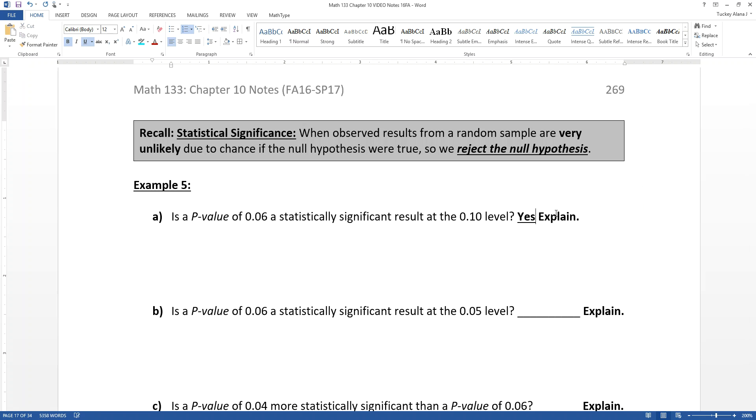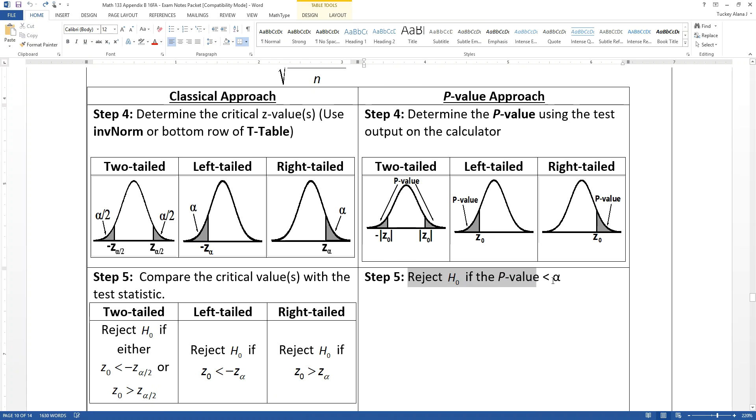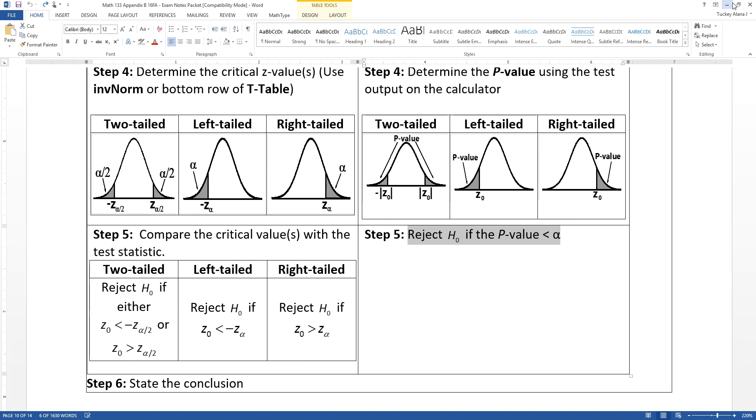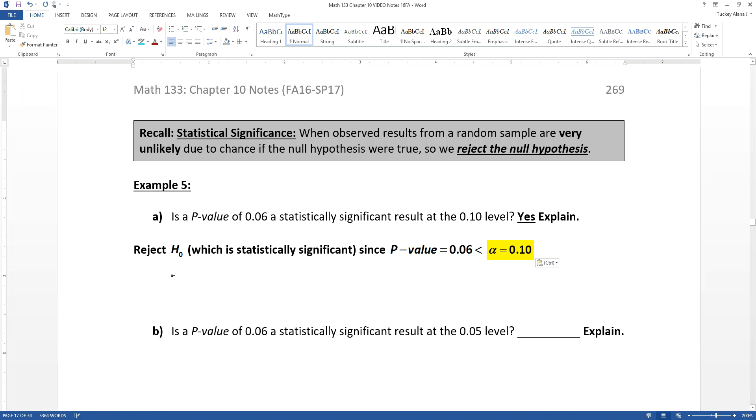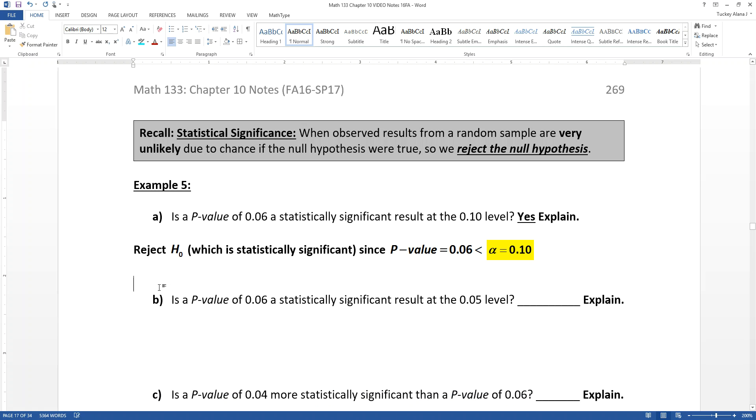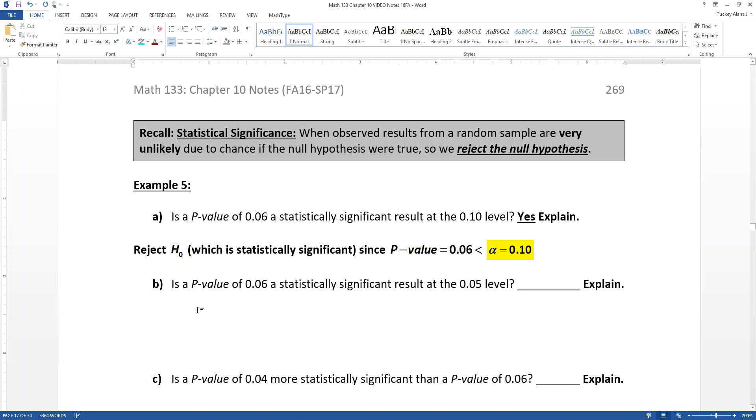So remember that we get to reject the null hypothesis if your p-value is less than alpha, period, the end. That's what makes p-value so awesome. You're always looking for a low p-value. So we would reject the null hypothesis because our p-value is less than alpha and that means statistically significant. We got to reject that null just like we wanted. We didn't want to take it anyway. So we are rejecting the null hypothesis.